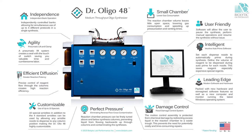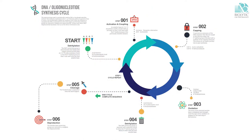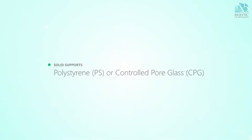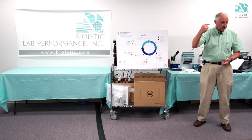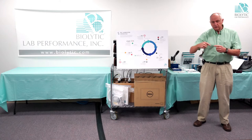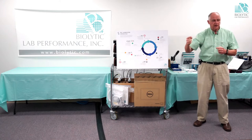This instrument is designed to make single-stranded oligos — DNA, RNA, or MNA. It uses solid phase chemistry, which means you start with a solid support of some kind. In this chemistry, that's polystyrene or controlled pore glass, typically referred to as CPG. Those are the solid materials that the molecule starts attached to, and then it's grown while attached to that solid material.